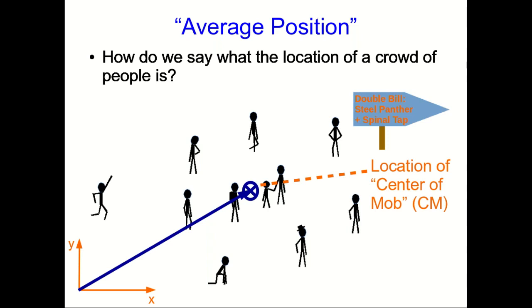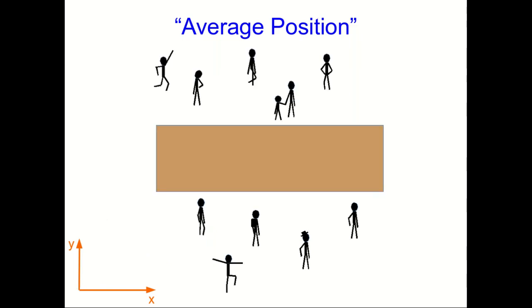So you might call it the center of mob, CM, or so the vector is now the RCM. And of course, if the crowd is forced to split up to go around some sort of a barrier, you can easily end up in the situation where RCM points at a location where there's no one even close to it, but it is still identifying the middle of the crowd.